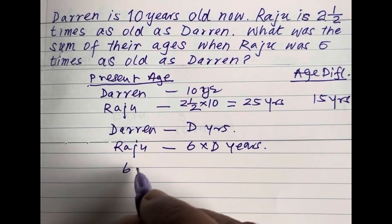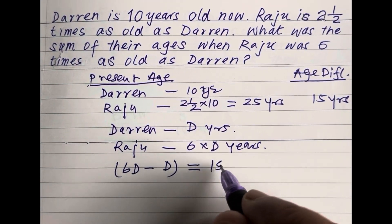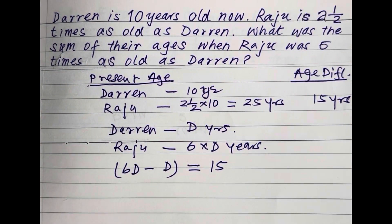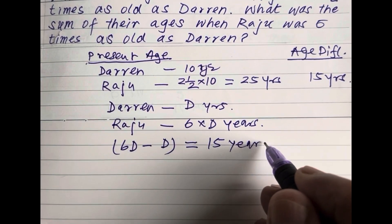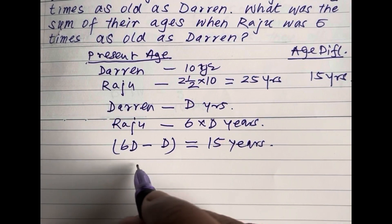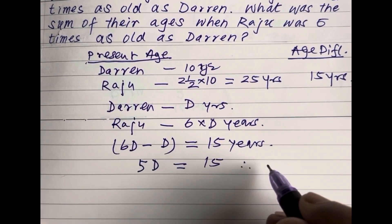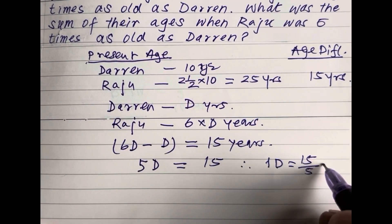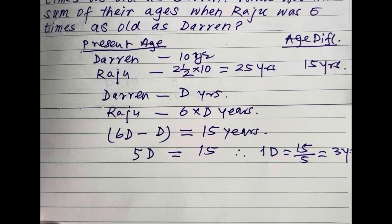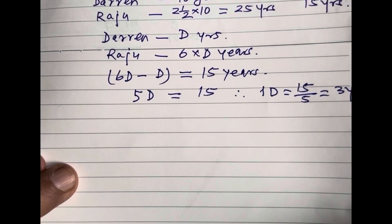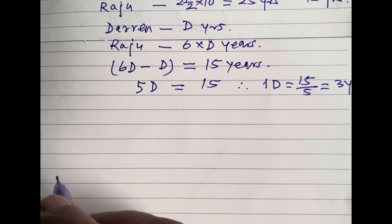This age difference, six D minus D, will again be 15 years, as the age difference is a constant. Therefore, six D minus D, that is five D, equals 15 years. Hence D equals 15 divided by 5, that is 3 years.